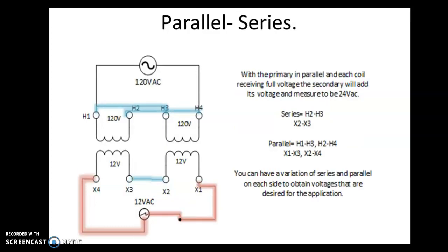From the same example of parallel parallel to a parallel series connection, we see full voltage applied to the primary coils at 120 volts apiece. By inducing 12 volts per coil on the secondary side and putting that in a series connection instead of a parallel, this voltage will actually add and that should be 24 volts AC.